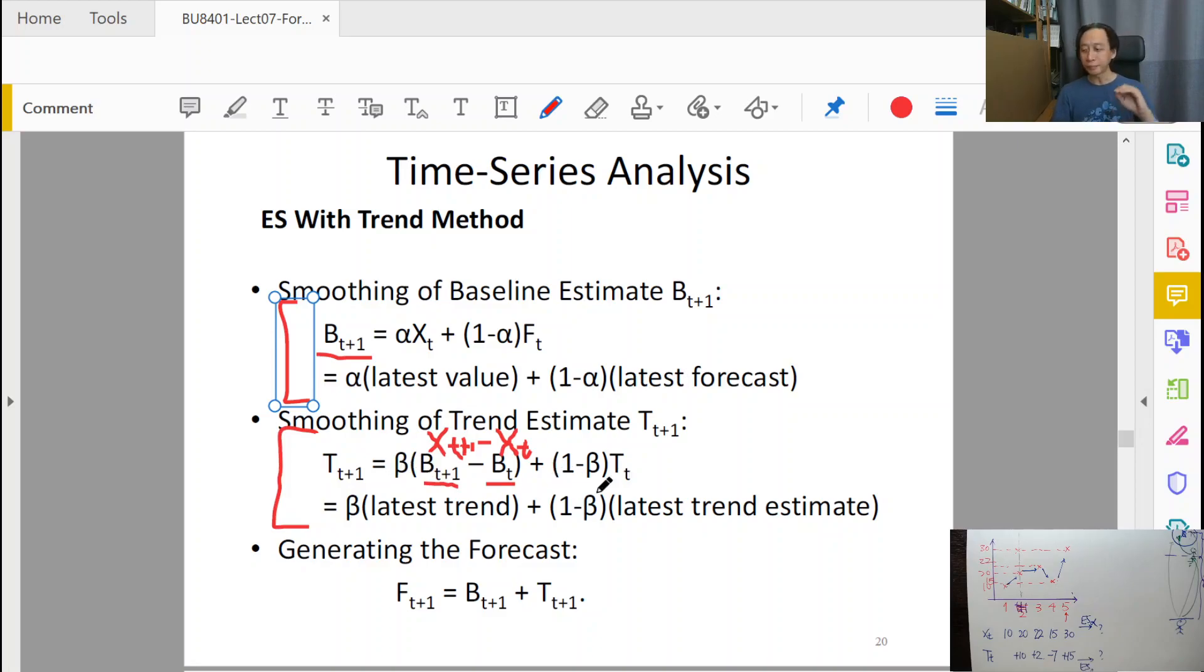This subtraction gives us the trend value that we multiply into beta: T_{t+1} = β(B_{t+1} - B_t) + (1-β)T_t. We're basically calculating another exponential smoothing, and T_{t+1} is our ES forecast for the next trend value. After calculating B_{t+1} and T_{t+1}, we can add them together to get our forecast for time t+1. In terms of execution, follow the sequence: do B_{t+1} first, followed by T_{t+1}, because T_{t+1} requires the value of B_{t+1}.